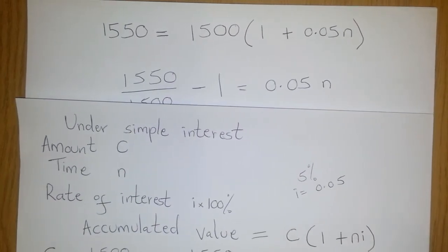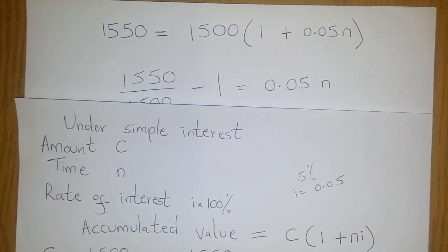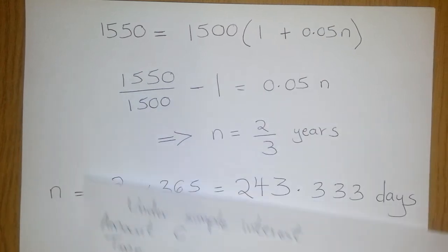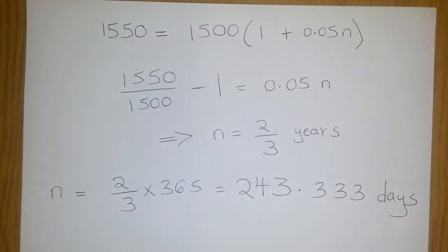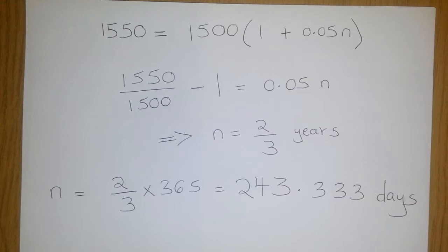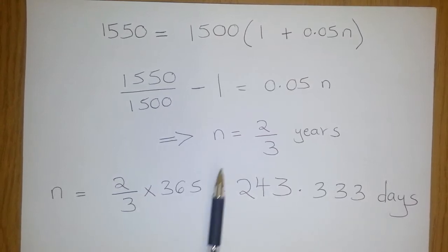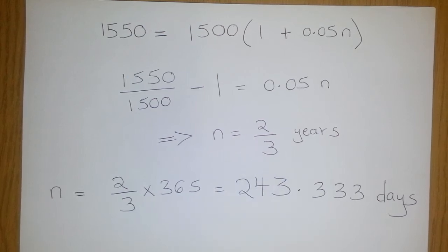So simplifying this equation to find n, we simply divide through by 1500 and then subtract 1 on both sides to end up with n equal to 2/3 years.